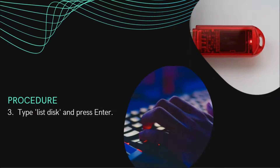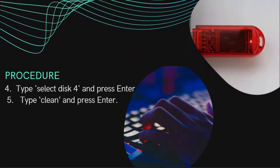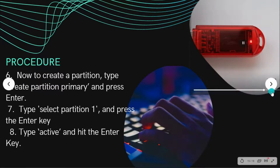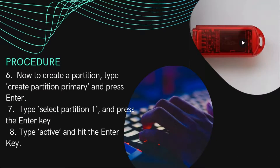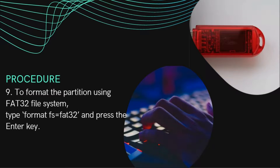Type 'list disk' and press Enter. Type 'clean' and press Enter. Now to create a partition: type 'create partition primary' and press Enter, type 'select partition 1' and press Enter, then type 'active' and press Enter. To format the partition using the FAT32 file system, type 'format FS=FAT32' and press Enter.